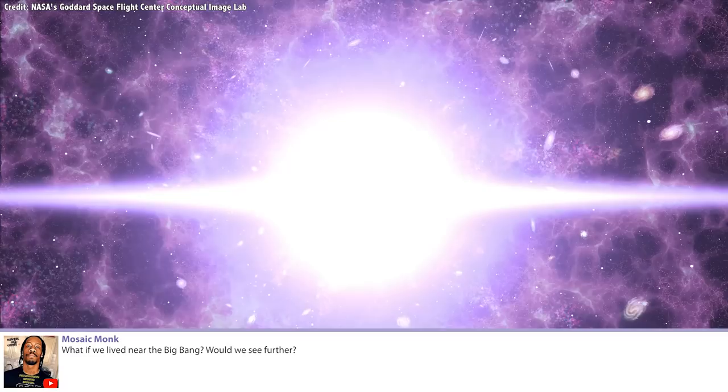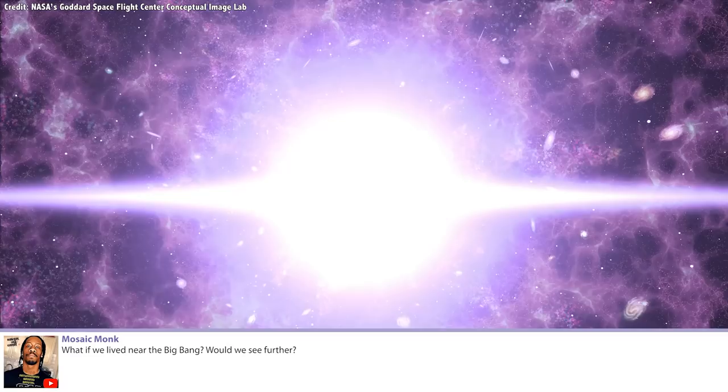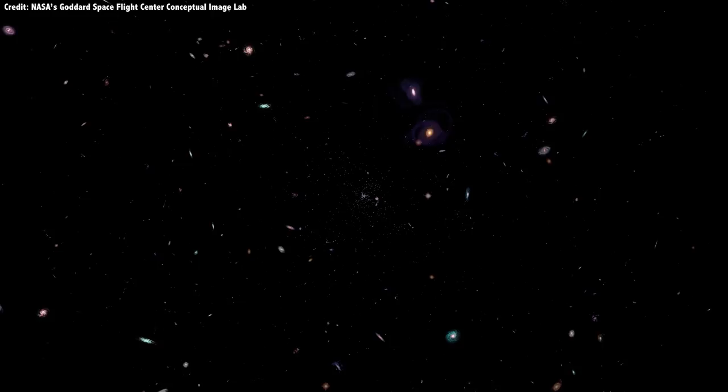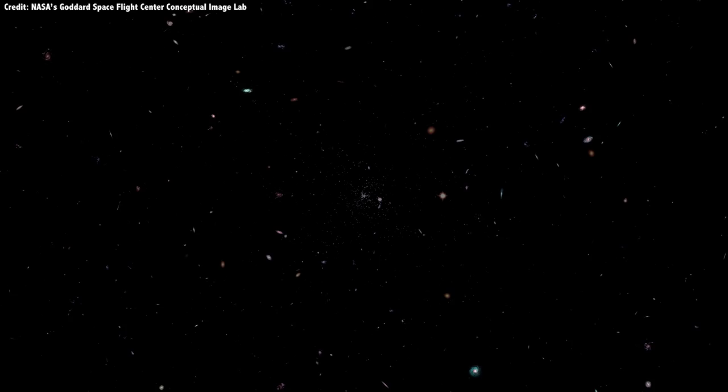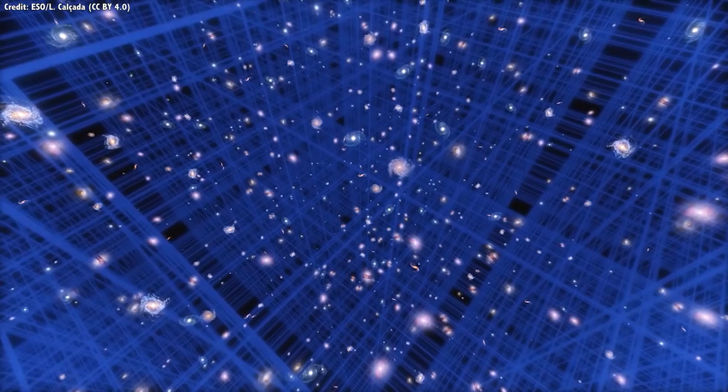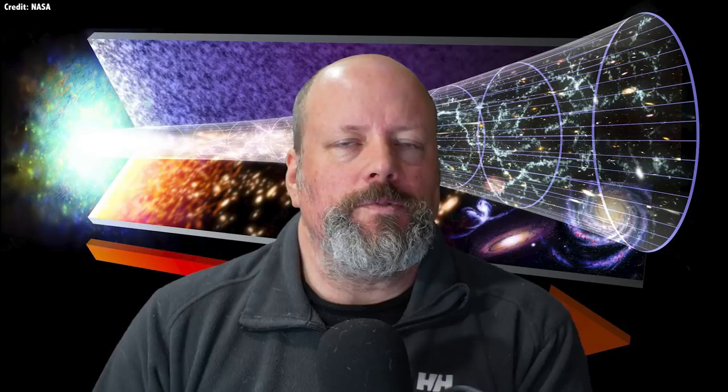Mosaic monk asks: What if we live near the Big Bang? What would we see further? This is one of the advantages during the live show - one person asks a question, now we get a follow-up question from someone else, which is great. So say with me: the Big Bang didn't happen in one place. The Big Bang happened everywhere, across all of space. Every part of the universe was where the Big Bang happened, because it's an expansion of space, not an explosion in space. And so you live right beside where the Big Bang happened, and so do I, and so does someone on a galaxy that's really far away from us and someone who is right out to the edge of the observable universe. They live right beside where the Big Bang happened, because the Big Bang happened everywhere.